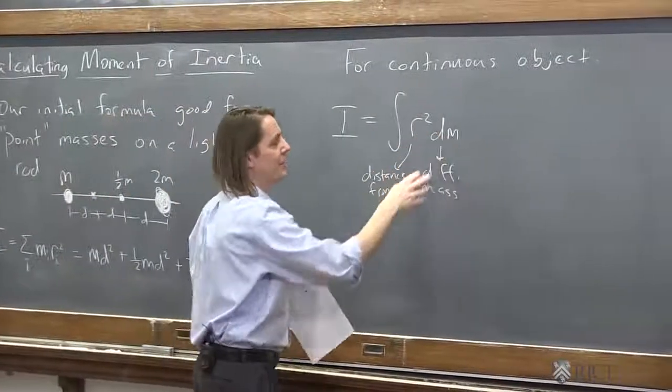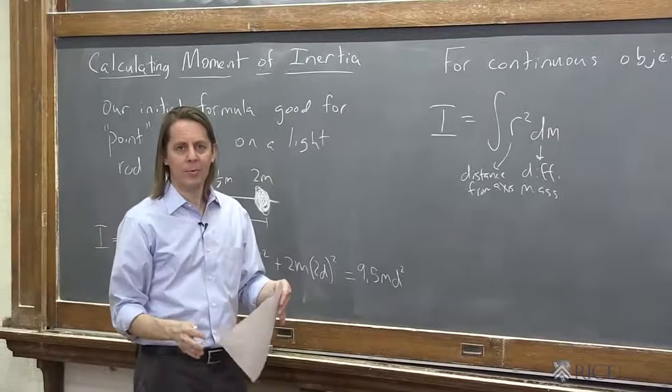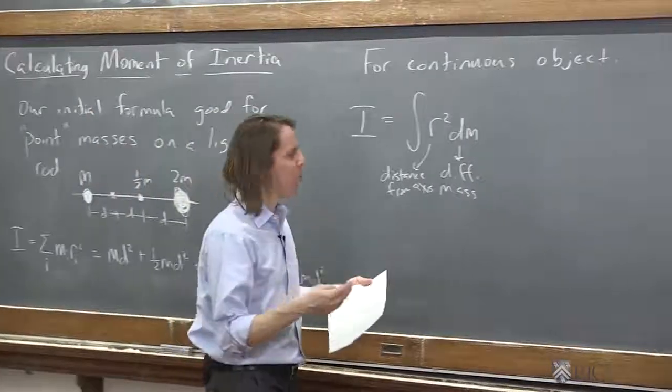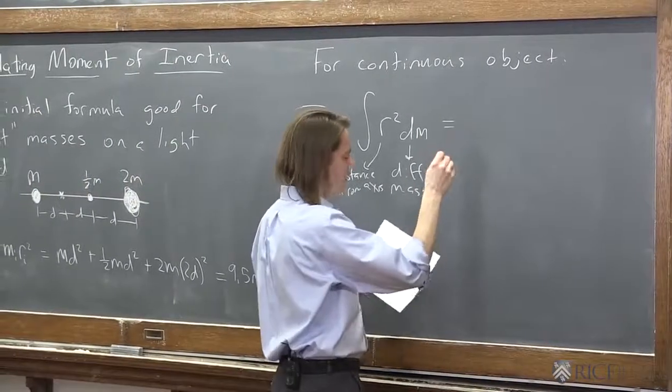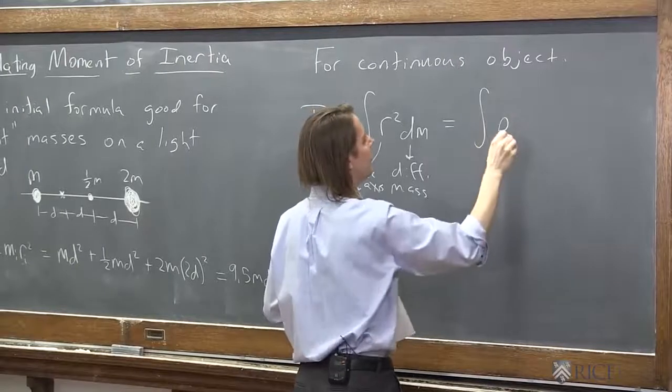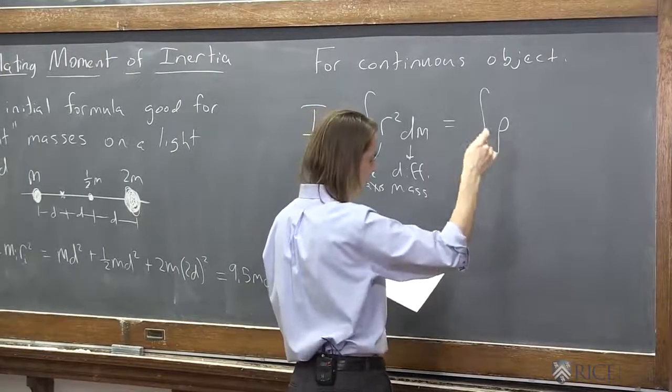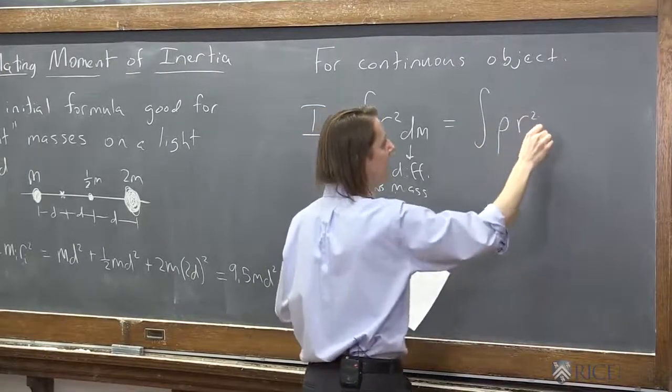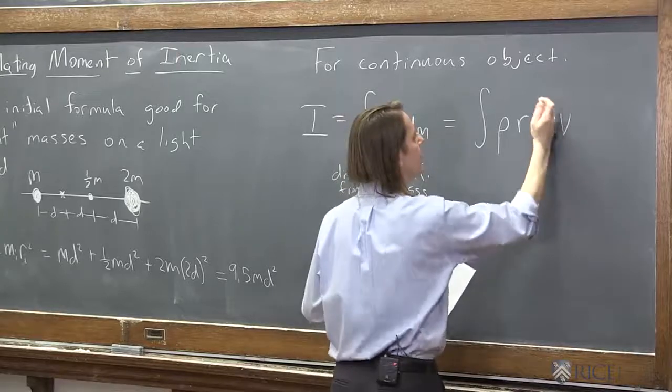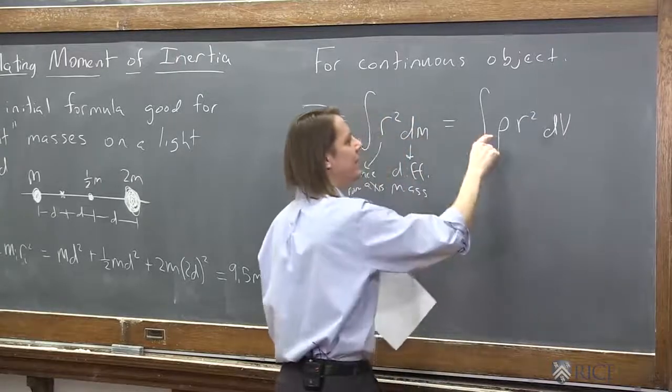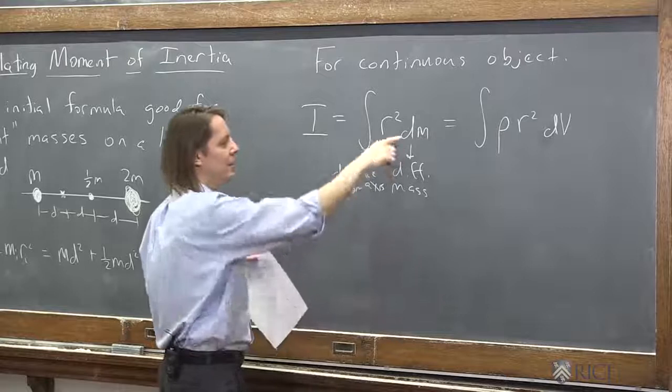But in the real world, to do this calculation, you have to take your differential mass elements and describe them on some coordinate system and then integrate with respect to coordinates. So if it's a 3D object, it would be the integral, and you just take the density times r squared times dV. Because the density times the volume element is dm.